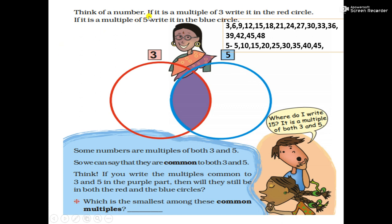Think of a number. If it is a multiple of 3, write it in the red circle. If it is a multiple of 5, write it in the blue circle. And if the number is a common multiple, then write that number in this common place. First of all, we will write multiples of 3: 3, 6, 9, 12, 15, 18, 21, 24, 27, 30, 33, 36, 39, 40, 45, 48. All these are multiples of number 3 because these numbers we can divide by 3.